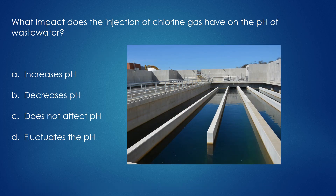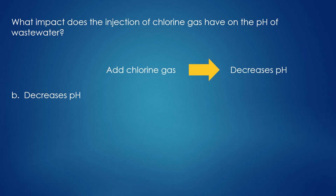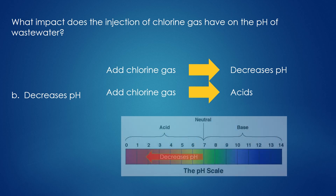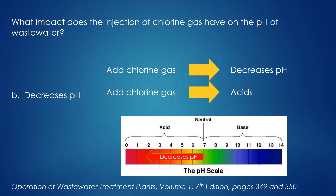What impact does the injection of chlorine gas have on the pH of wastewater? It decreases pH. When chlorine gas is added to wastewater, it decreases the pH. Acids are formed when chlorine gas is injected into the wastewater, and from the pH scale we know that acid has low pH. Therefore, if acids are being formed, the pH must decrease — it moves to the left on the pH scale. So remember, if chlorine gas is added to wastewater, the pH decreases. To learn more, go to the textbook Operation of Wastewater Treatment Plants Volume 1, pages 349 and 350, for more detail.